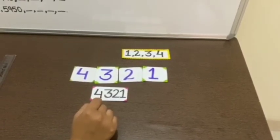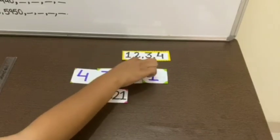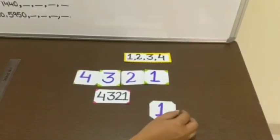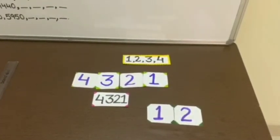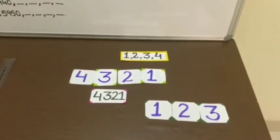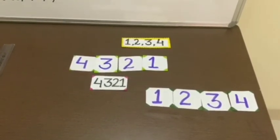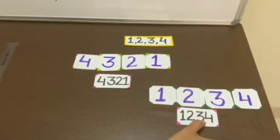And next to form the smallest number, we will find the smallest digit among these. So the smallest digit is 1. Then greater than 1 is 2. Next 3 and at last 4. So this number formulated is 1234.